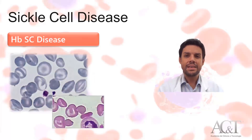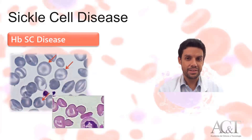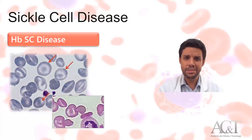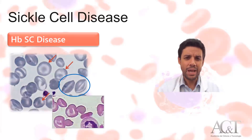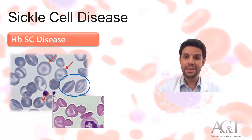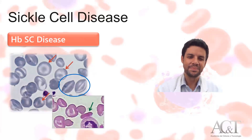Hemoglobin SC disease has some different features. For instance, you may see a large number of target cells and not so many sickle cells — sometimes you have to hunt for sickle cells in the smear. Also, you can see these different red cells, which are also elongated with stripes of hemoglobinization across the cell. And if you're lucky, you may find a crystal of hemoglobin C, although this is very rare to find.